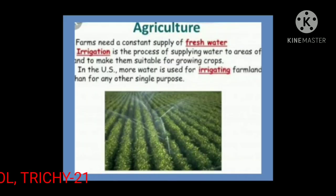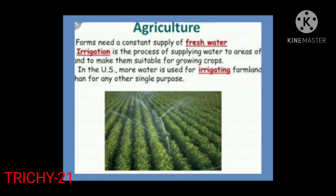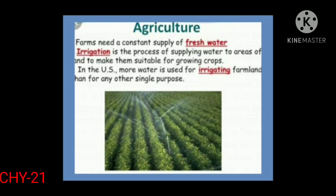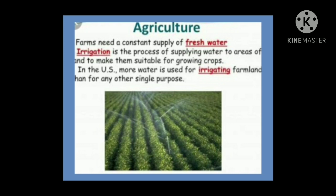Farms need a constant supply of fresh water. Irrigation is the process of supplying water to areas of land to make them suitable for growing crops. In the U.S., more water is used for irrigating farmland than for any other single purpose.